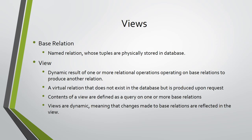One useful concept of the relational model is views. Views are defined upon base relations, which are the normal relations discussed so far, whose tuples are physically stored in the database. Views are the dynamic results of one or more relational operations operating on base relations to produce another relation. A view is a virtual relation that does not necessarily actually exist in the database, but is produced upon request at the time of request. The contents of a view are defined as a query — an operation or combination of operations on one or more base relations. Views are dynamic, meaning that changes made to base relations that affect view attributes are immediately reflected in the view.